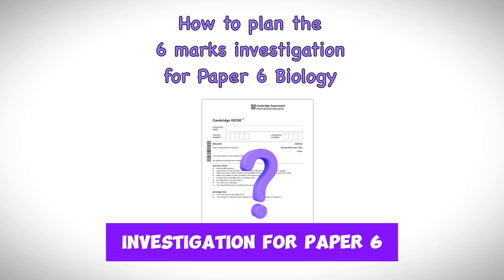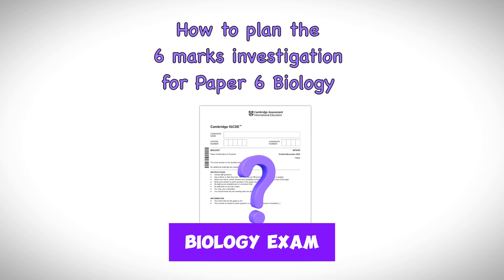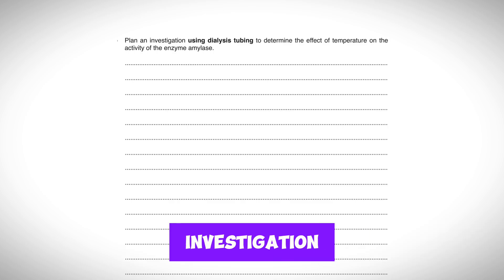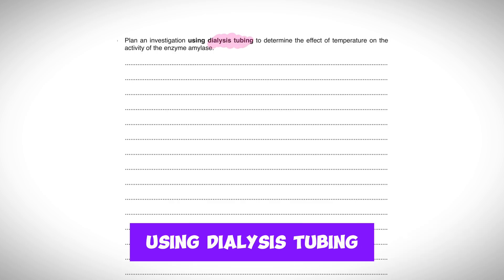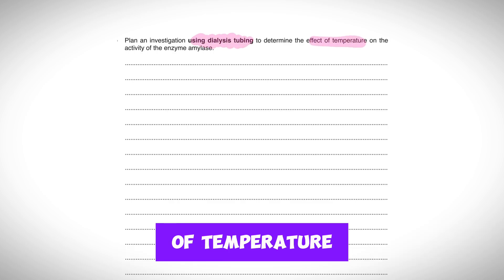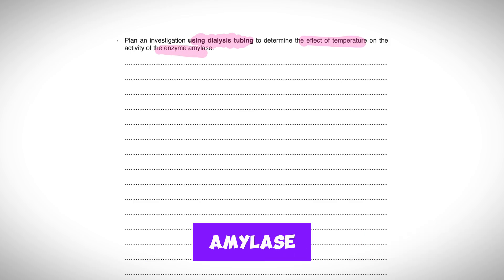How to plan the investigation for a paper 6 biology exam. Here's a question: plan an investigation using dialysis tubing to determine the effect of temperature on the activity of amylase.